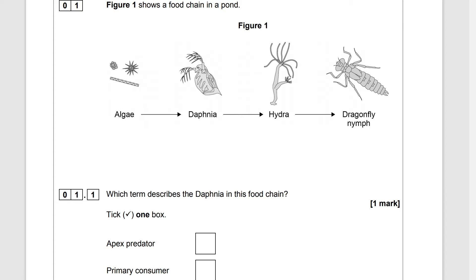We have got the algae which are at the start of the food chain so we call them producers. Then we have Daphnia which are primary consumers and then we've got the Hydra which are the secondary consumers and the Dragonfly Nymph which is the tertiary consumer in this food chain and because the Dragonfly Nymph is at the end of the food chain it's also known as the top or the apex predator.